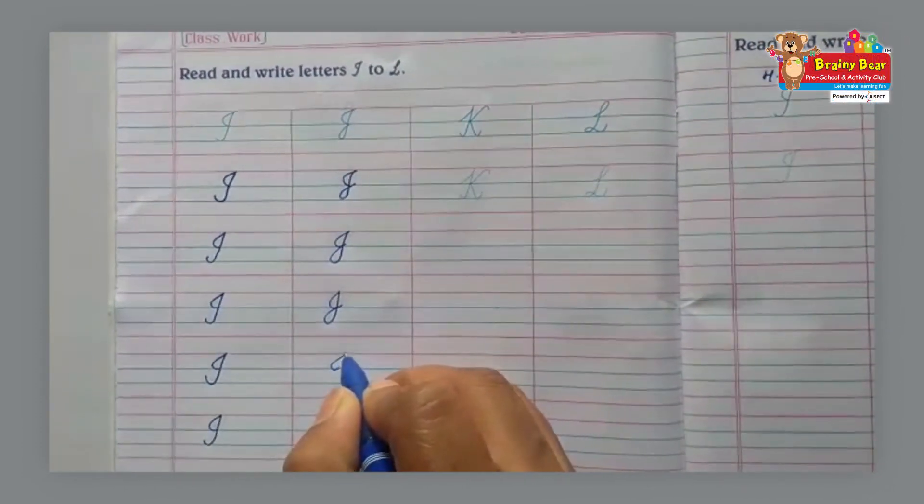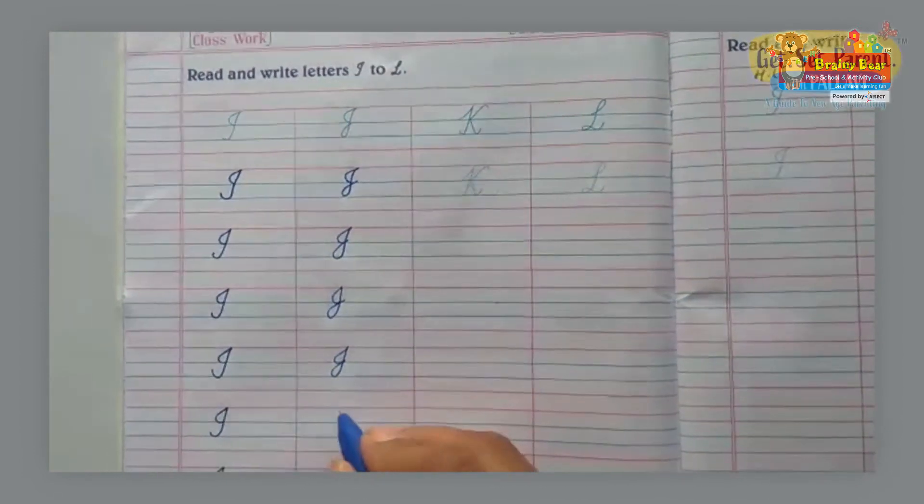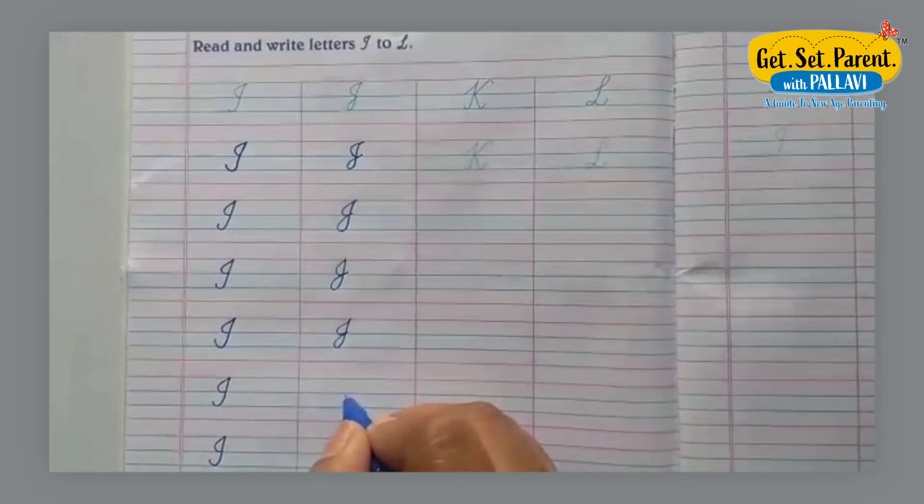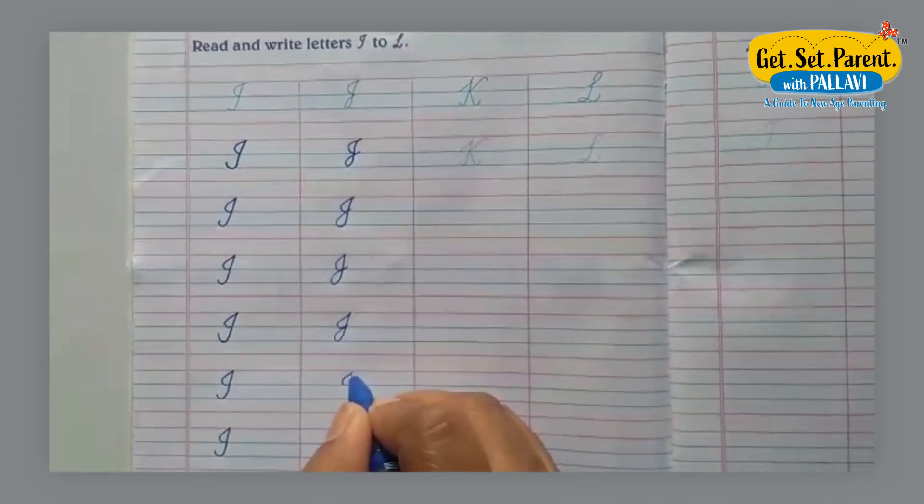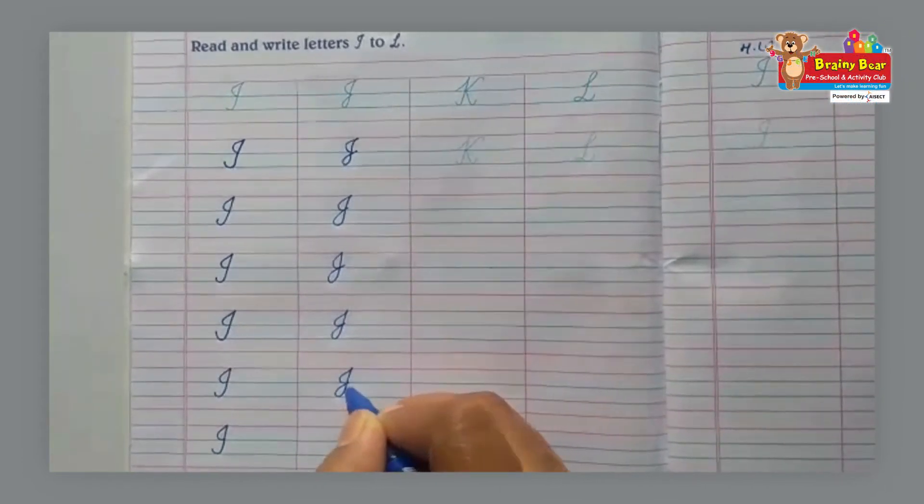Again, first we have to make like I and the second loop like this. Again like I, go down and loop.